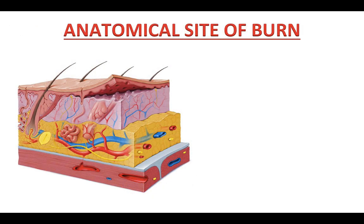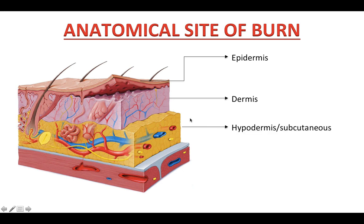If you watched my last lesson about how to code burns, you would recognize this slide about the basic anatomy and physiology of the skin. It would be very challenging to code any surgical procedures related to the integumentary system without knowing the skin layers. The skin has three layers: the epidermis, the dermis, and the hypodermis or subcutaneous tissue, and below this layer is the fascia or muscle.